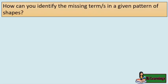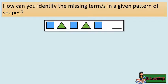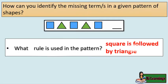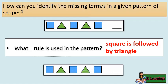How can you identify the missing term in a given pattern of shapes? Square, triangle, square, triangle, square, blank. What rule is used in the pattern? Square is followed by triangle. The missing term is triangle.